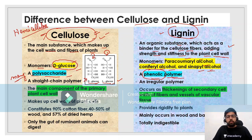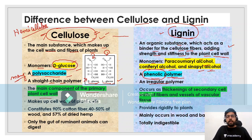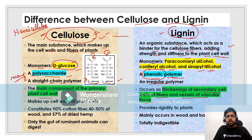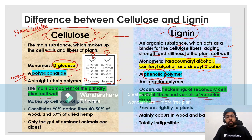Cellulose is a straight-chain polymer, while lignin is an irregular polymer. Cellulose is the main component of the primary plant cell wall. Lignin occurs as a thickening of the secondary cell wall of the fibers and vessels of the vascular tissue — specifically, it is present in the thickenings of the secondary cell walls of the xylem fibers and xylem vessels.